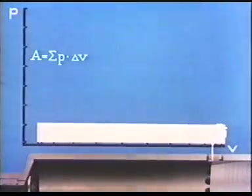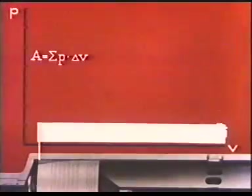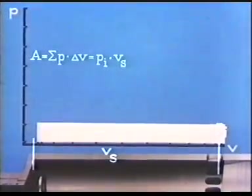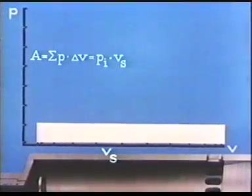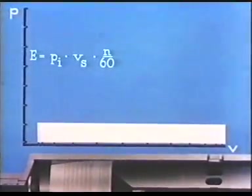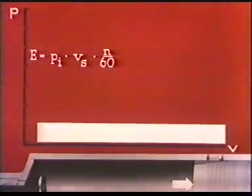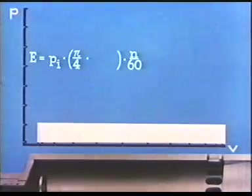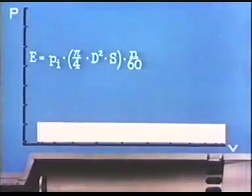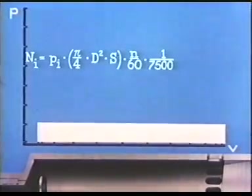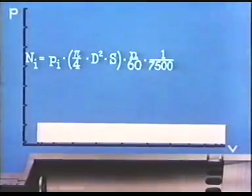The work in kilogram centimeters for one revolution will thus be A equals PI multiplied by Vs, where Vs is the full stroke volume in cubic centimeters, and PI, the mean indicated pressure in kilograms per square centimeter. There is one working stroke in each revolution, so if we multiply by the revolutions per second, N over 60, we get the work in kilogram centimeters per second, that is to say the power. Instead of Vs, we substitute the piston area multiplied by the stroke length, that is PI over 4 multiplied by D squared multiplied by S cubic centimeters. To arrive at the output in horsepower, 75 kilogram meters per second, we have to divide by 7500, and we thus have the equation for computing the horsepower developed in each cylinder of the engine.